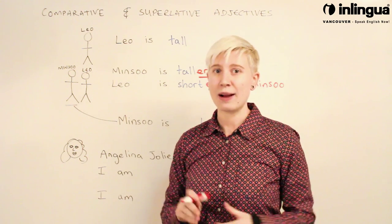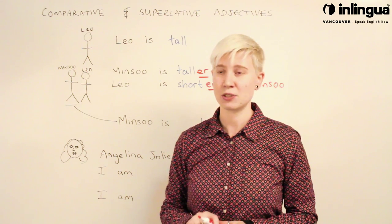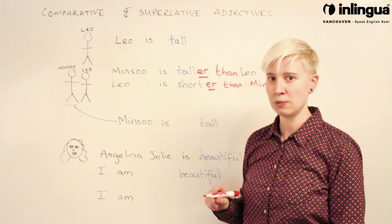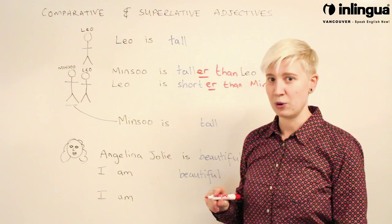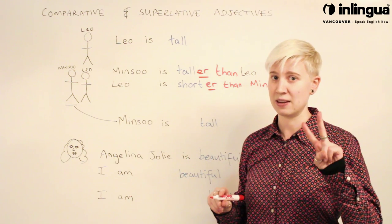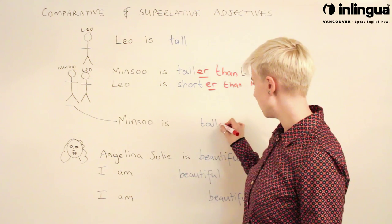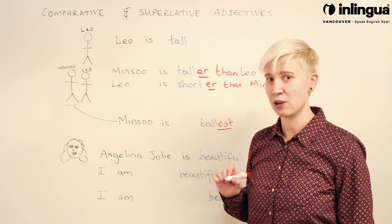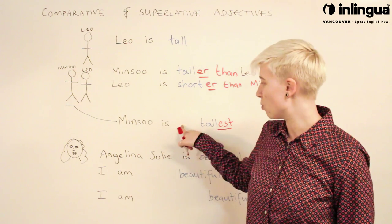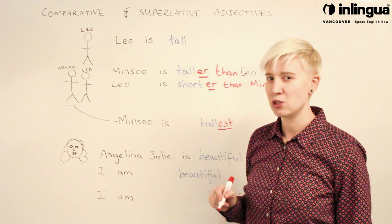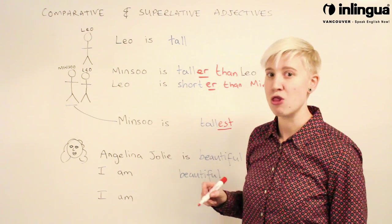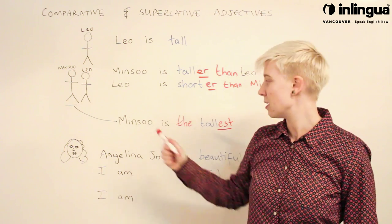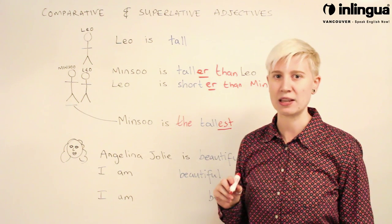Then we have to do something slightly different. Let's look at my sentence down here: Minsu is tall. We're still going to add two things in — we're going to add 'EST' to the end of the adjective, and we need the word 'the'. Minsu is the tallest.